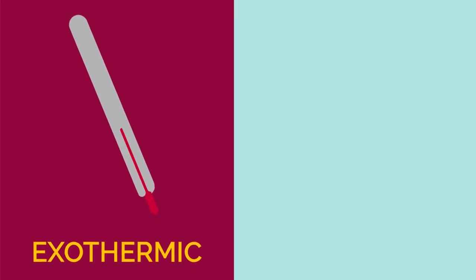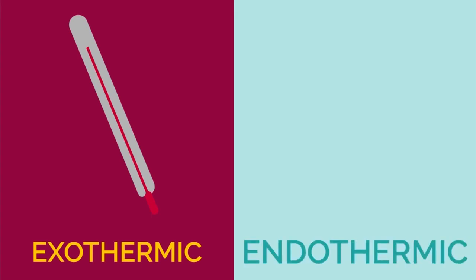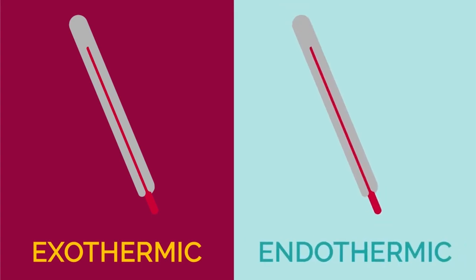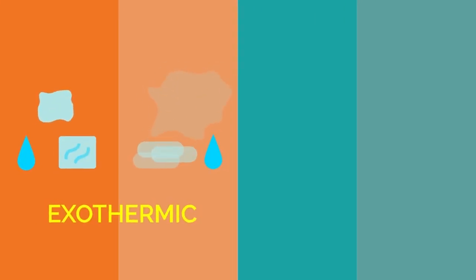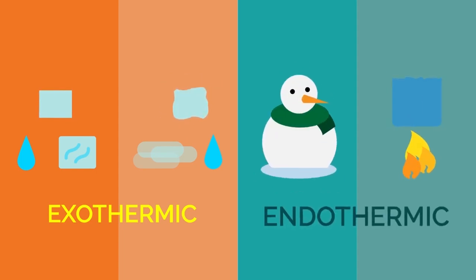In exothermic reactions the surroundings get hotter, and in endothermic reactions the surroundings get colder. Exothermic reactions start with more energy and end with less, while endothermic reactions start with less energy and end with more. Freezing and condensation are exothermic because bonds need to be made, which gives out energy. Melting and boiling are endothermic because bonds are broken, which requires additional energy — think of the snowman. And finally, exothermic reactions are more common.